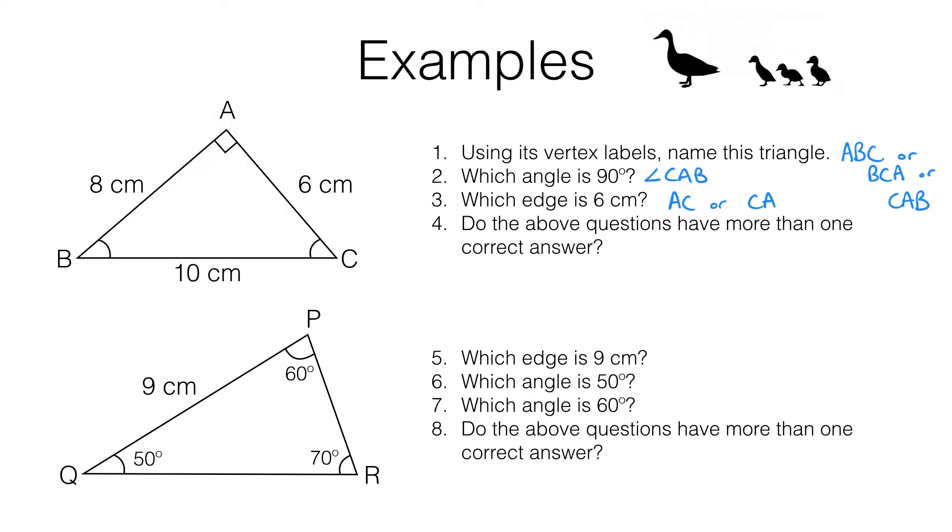And for question three, is there more than one correct answer? Yes, we can call this AC or CA. Let's move on to the second set of questions. This time we're looking at a different triangle. Pause the video and have a go at these for yourself.